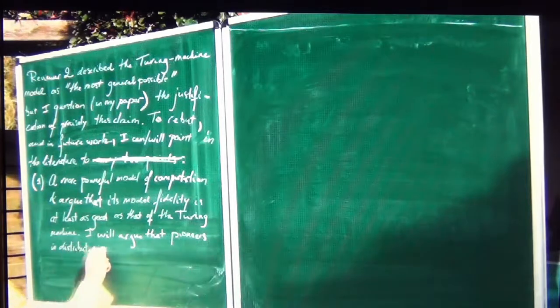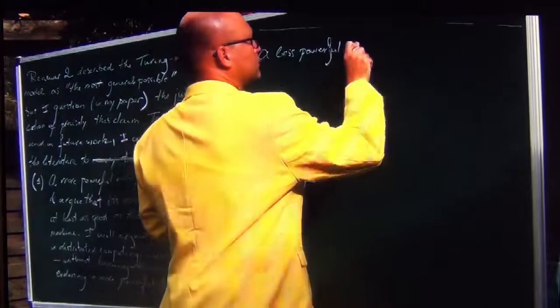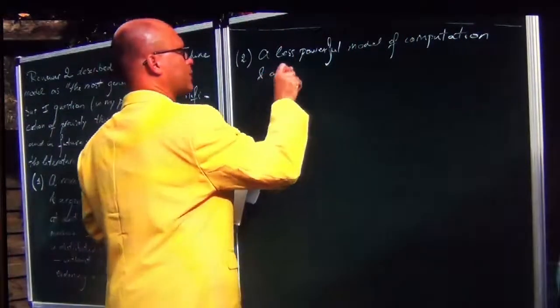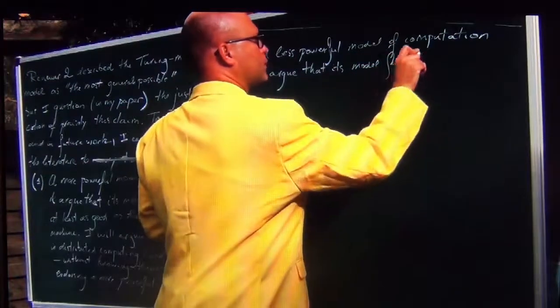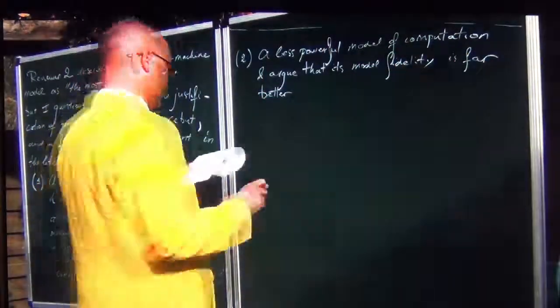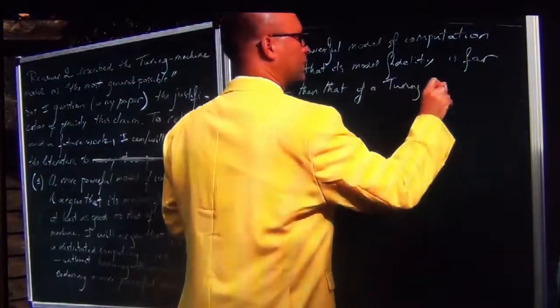In the literature, I can point to a more powerful model of computation and argue that its model fidelity is at least as good as that of the Turing machine. In future work I will argue that pioneers in distributed computing were, without knowing themselves, endorsing a more powerful model of computation than the Turing machine. And number two, I can point to a less powerful model of computation and argue that its model fidelity is far better than that of a Turing machine.